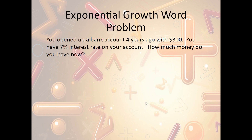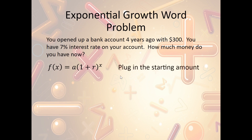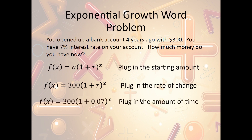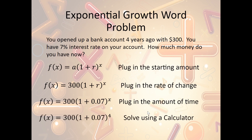Let's look at another example. We opened a bank account four years ago with $300 and have a 7% interest rate. How much money do we have now? Using the exponential growth formula: a = $300, r = 7% = 0.07, and x = 4 years. Plugging in and solving with a calculator, we end up with $393.24.